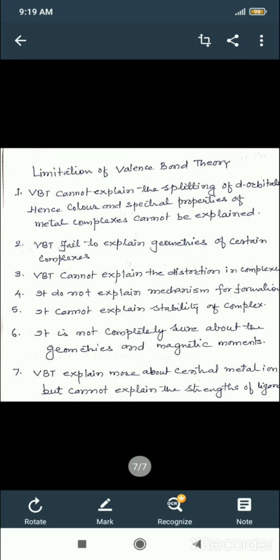They split the orbitals into t₂g and eg. In the case of VBT, they don't have any explanation about the splitting. If there is no splitting, there is no movement of electrons. Second, they fail to explain geometries like dsp² or sp³d. If the coordination number is four, why are there two types of geometries? They fail to explain such problems.